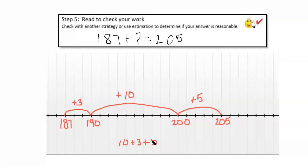So, again, I have plus 3 plus 10 plus 5. So, 10 plus 3 plus 5 equals 18. So, my answers match, and I'm pretty confident that my answer is correct.